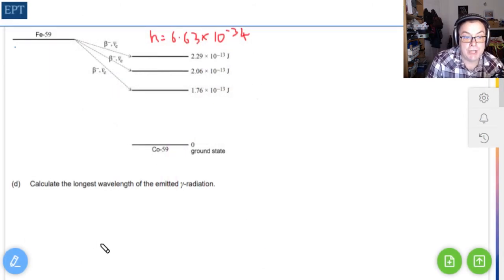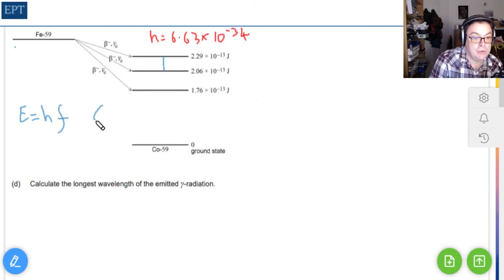Now we've been asked to find the longest wavelength of emitted gamma radiation. Longest wavelength means shortest frequency, which means least energy because frequency and energy are proportional. We're looking for the smallest drop, which is going to be these two. The energy change is going to be 2.29 take away 2.06 times 10 to the minus 13 joules. We know that energy equals Planck's constant times frequency, and c equals f lambda.